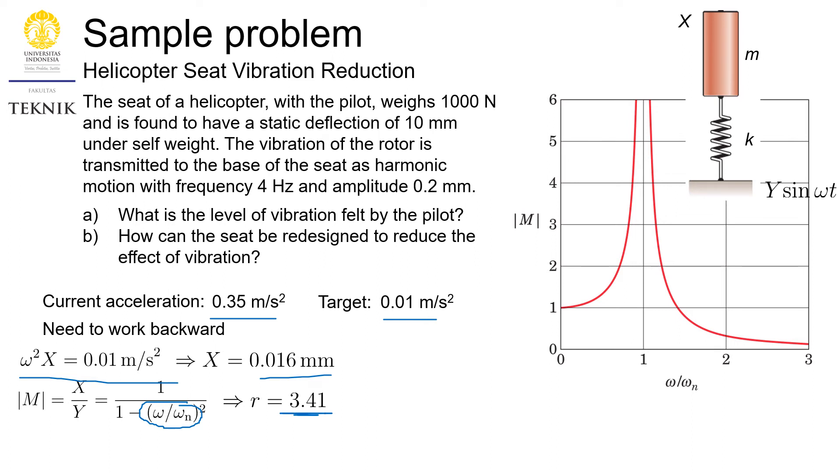So the desired ratio will be 3.41, which means our new omega_n is supposed to be 7.36. You know, you can always look at this magnification factor graph as well. If initially our operation is at ratio of 0.8, now we need it to be 3.41. So we are really shifting it to the right, making sure that the magnification value is very low.